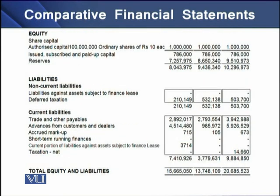Similarly, you can see the changes in equity from 2007 to 2009. In the same fashion you can see the changes in non-current liabilities and current liabilities from the first to the third period. So in this way you can compare the performance of the company in terms of liquidity, long term solvency, equity, and non-current liabilities from period one to period three.